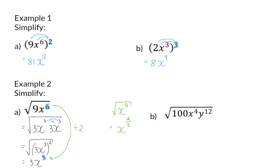So in B we can immediately start off by determining the square root of 100, which is 10. For the variable x to the power of 4 we divide the exponent by 2 to get 2. And the same goes for y — to get the square root we divide the exponent by 2.